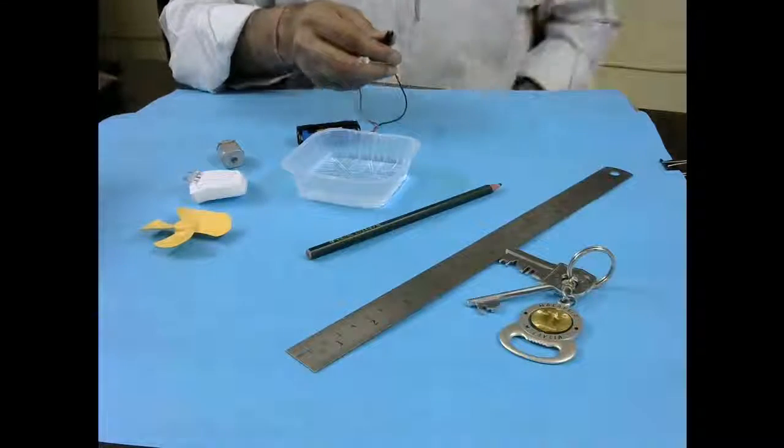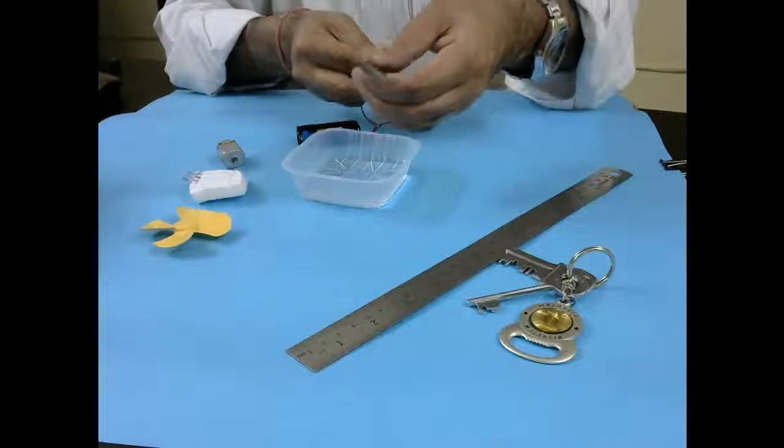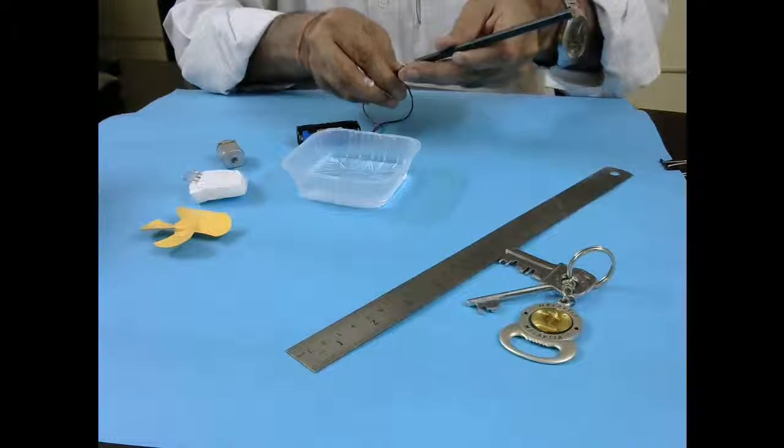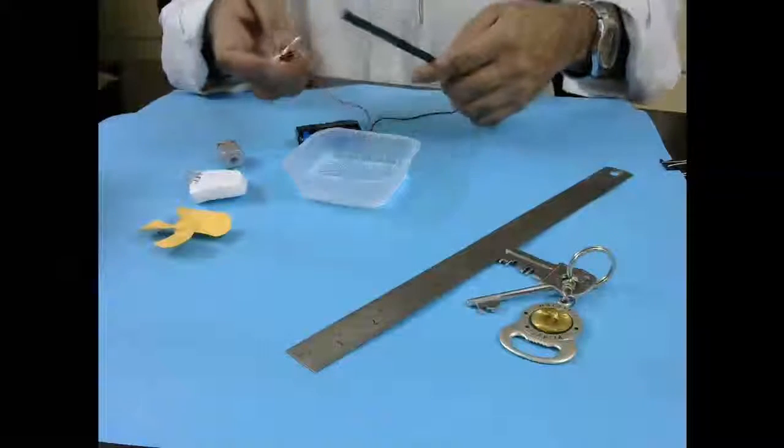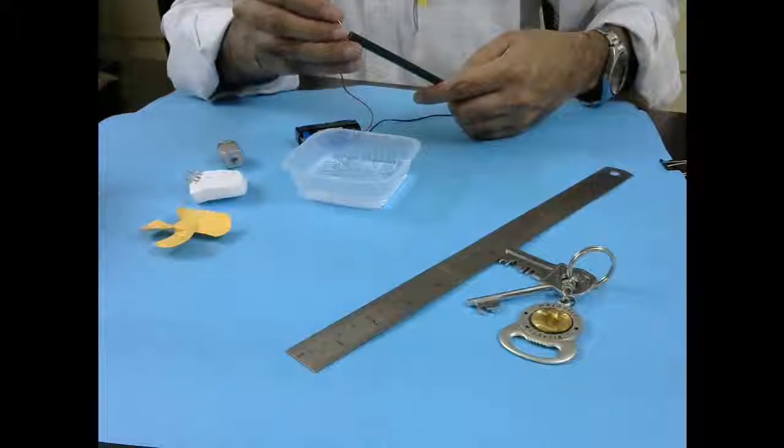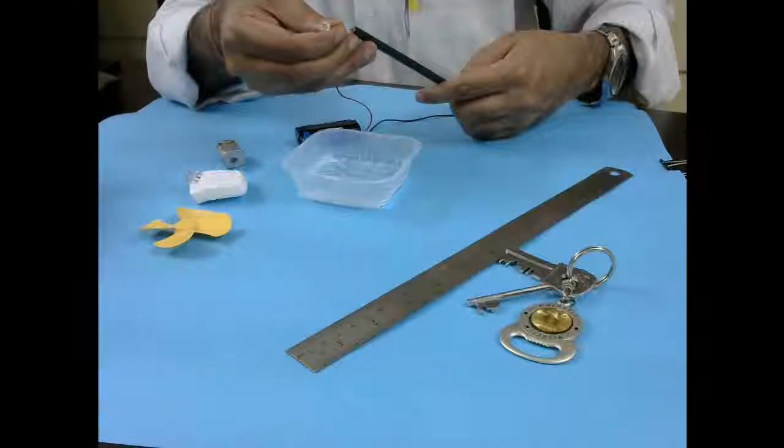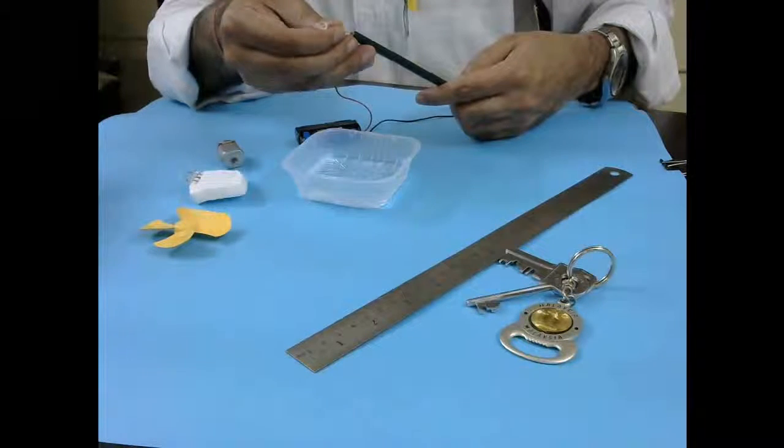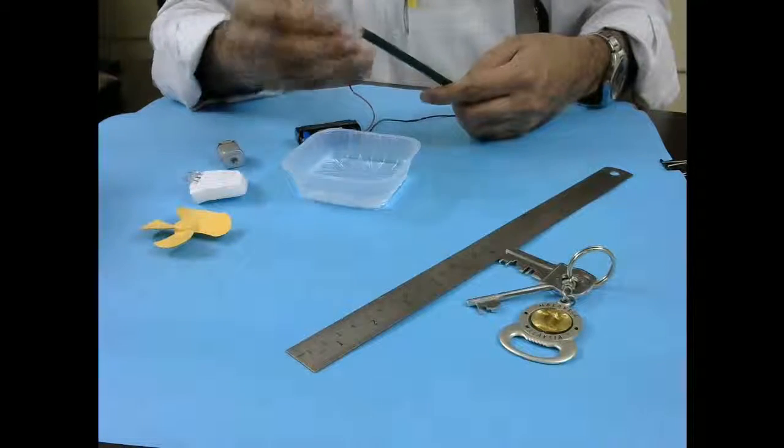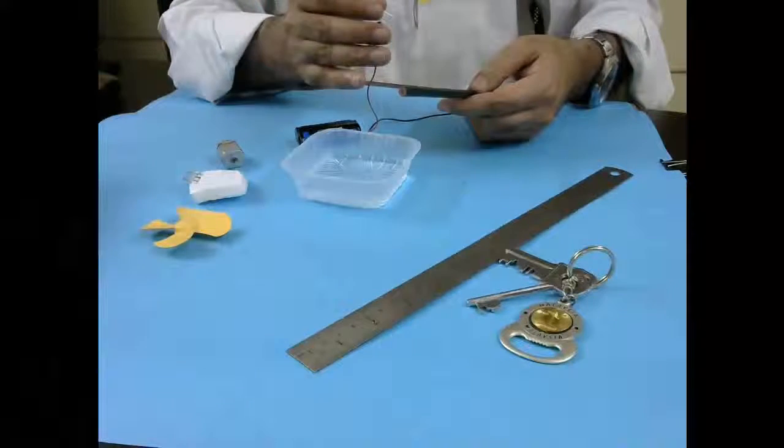Now let's try this pencil graphite or the lead inside the pencil. So I will connect the one connector here and then try to connect on the other side and see if the LED comes up. Okay you can't see it on the screen but when you do it yourself you will see that the LED comes up very dim which means it's a medium conductor. It's not a good conductor but it's not a complete insulator also.